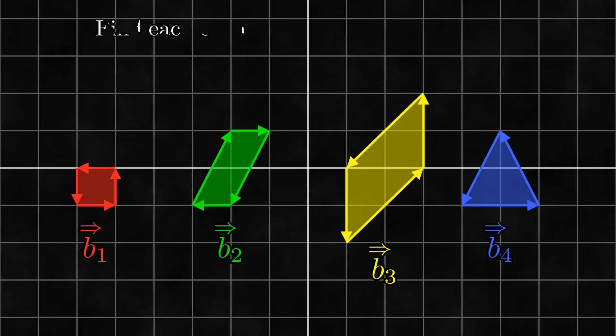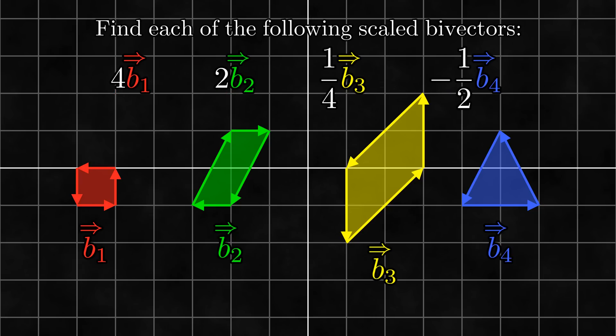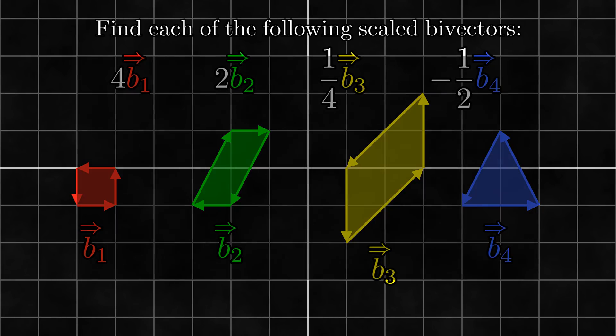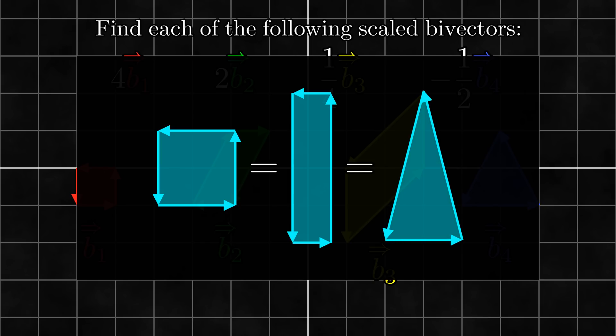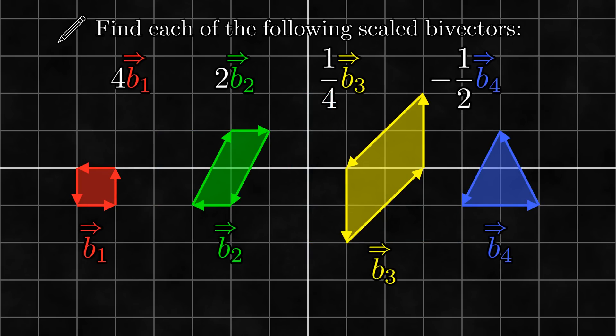Next, please find each of these scaled bivectors. Before you pause the video, I would like to mention that there are many valid ways to draw the answers to this exercise. Remember, bivectors only care about their orientation and magnitude, and the exact shape of the bivector doesn't matter at all. Thus, don't worry if the shape that you get after scaling the bivector isn't the same as the shape I'm about to show here. As long as the orientation and magnitude are the same, your answer is correct. Please pause the video and solve this before continuing.